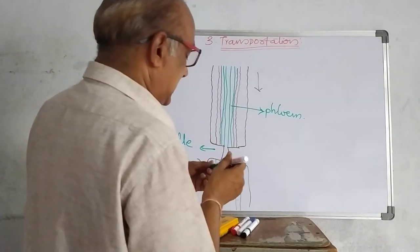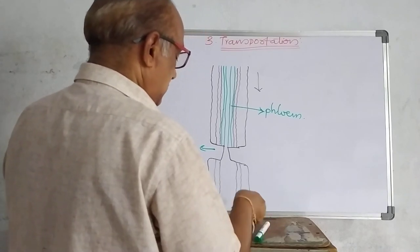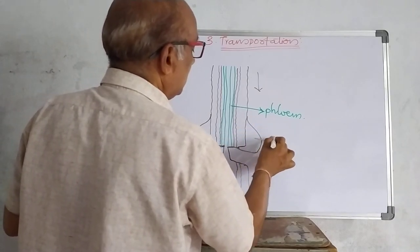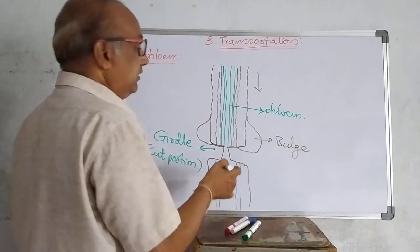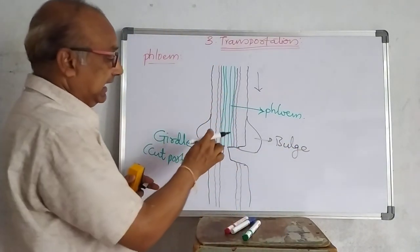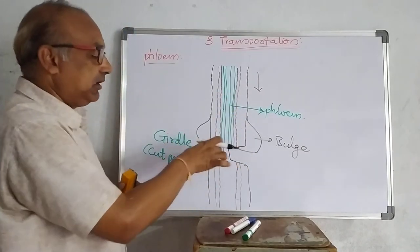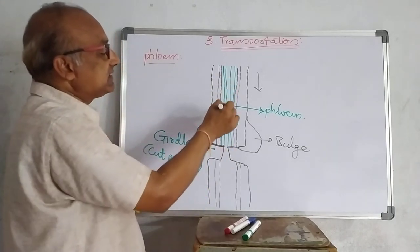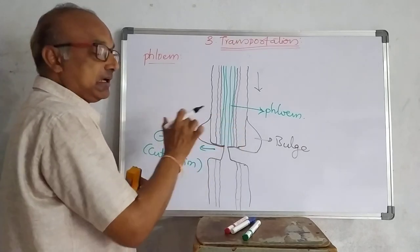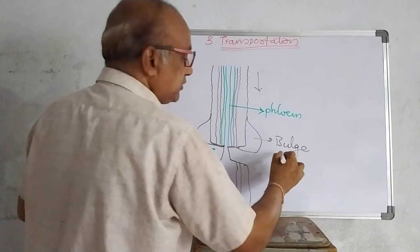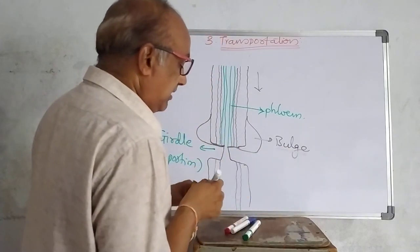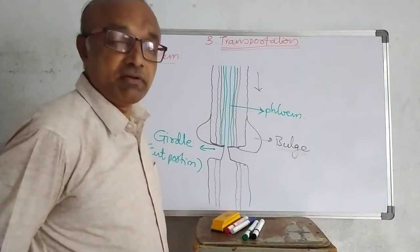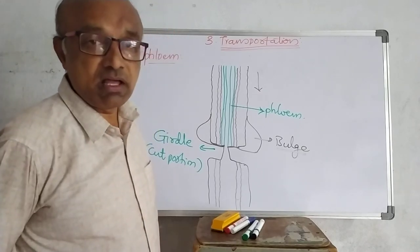Then after some days you can see there is a bulging of bark due to the accumulation of food from the phloem tissue is observed. It is only above the girdling but not below the girdling, because below the girdling there is no continuous supply of food. But above the girdling the food is supplied and accumulated at the cut portion. So it was bulged. So this bulge also indicates that the phloem is transporting food materials which was prepared in the shoot system to different parts of the body. Even the root system also can receive it.